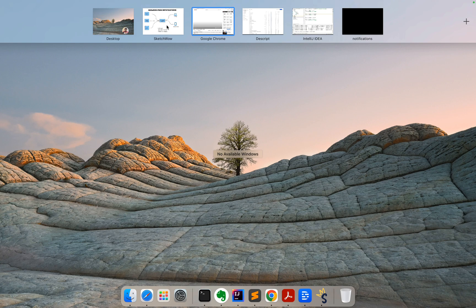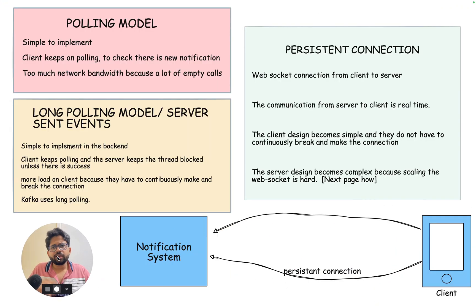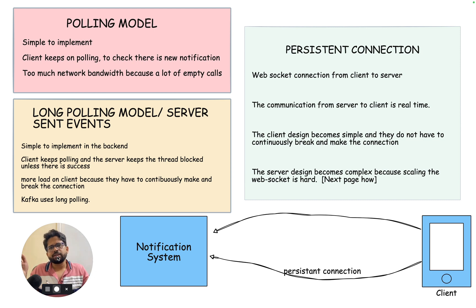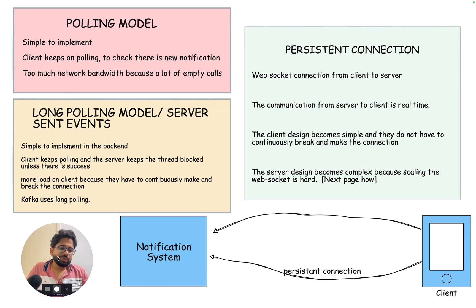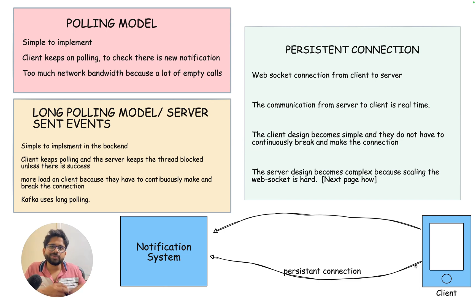How does a client communicate with a server? What are the various options a client has to get data from the server? The first thing you can do is keep polling the server — asking 'do I have a new notification?' — every two or three seconds. The problem is it takes up a lot of network bandwidth because most of these calls are empty. Most of the time the response is false, and you don't want to keep mobile phones so busy. So this doesn't scale well, though it is very simple to implement.